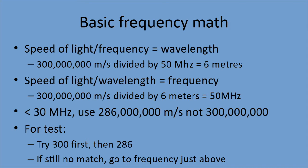Here's a quirk: if you're dealing with frequencies below 30 megahertz, use 286 million meters per second, not 300 million meters per second, as your calculation base. So here's the rule of thumb for the test: try 300 million first — if you don't get a good match, try again with 286 million. If that doesn't match, go to the frequency just above the one you calculated.